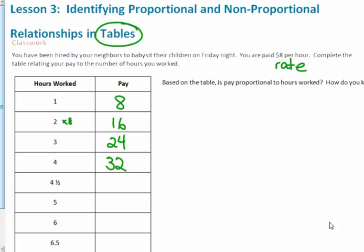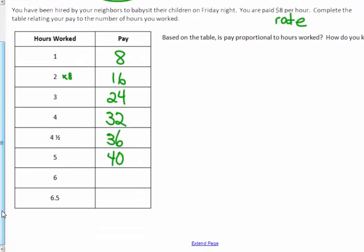4 and a half, well maybe I'll come back to that one. 5 times 8 would give me 40. Now 4 and a half I know is between 4 and 5. What's halfway between, or just adding half of my rate of pay, $4 on. Halfway between 32 and 40 is 4 more, which would be 36. Six hours would be 6 times 8, which is 48. And 6 and a half times 8 will give me $52.